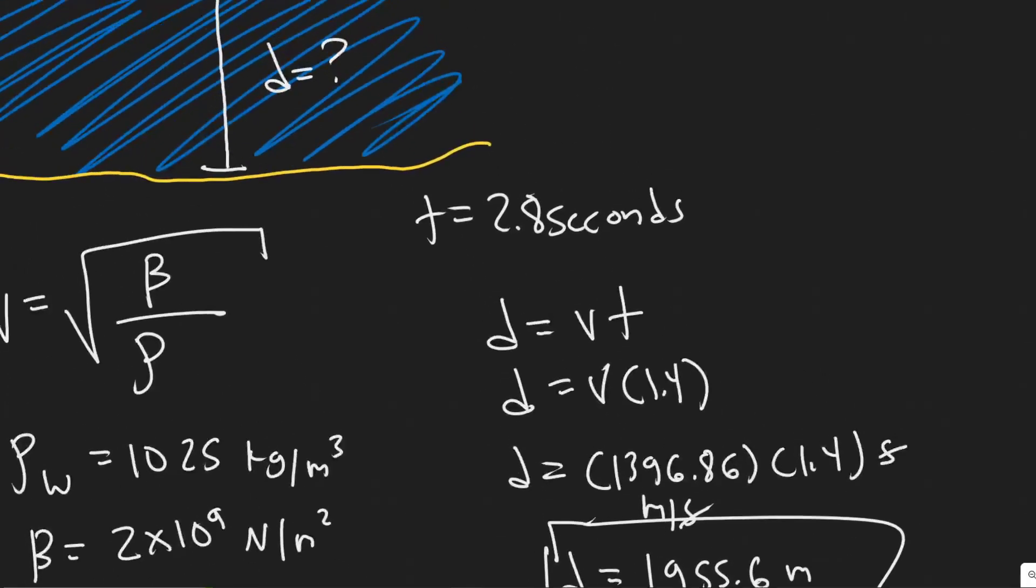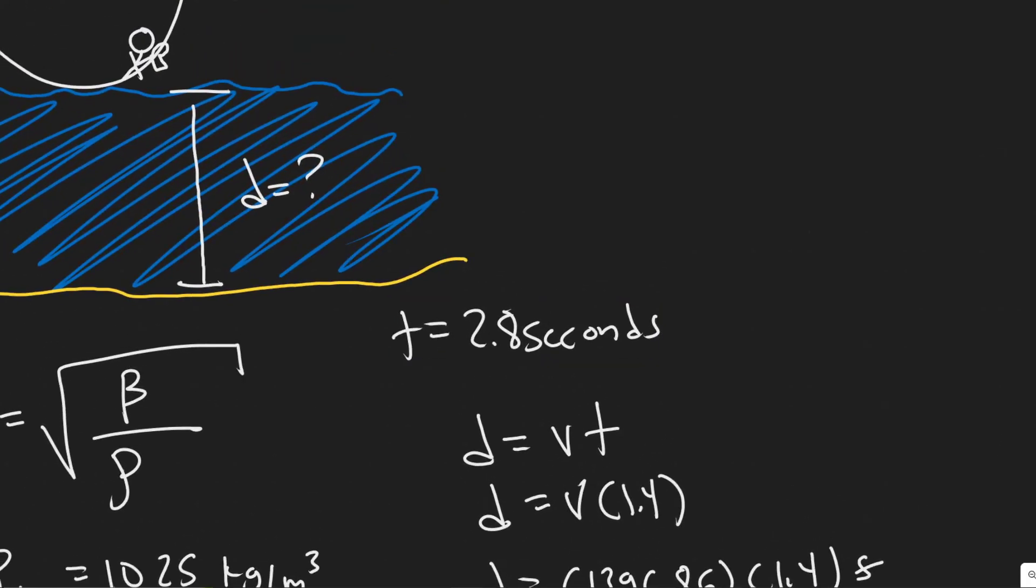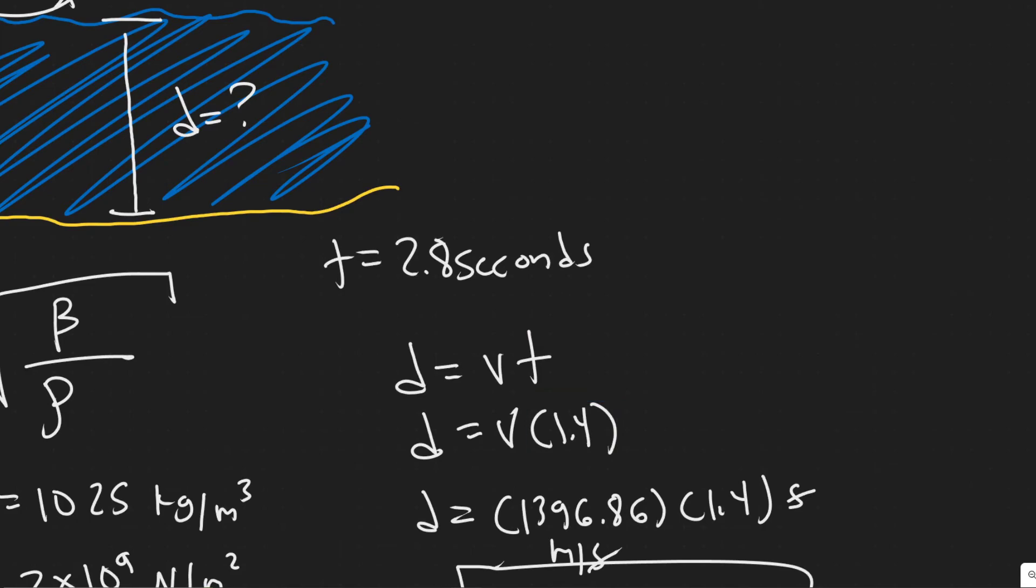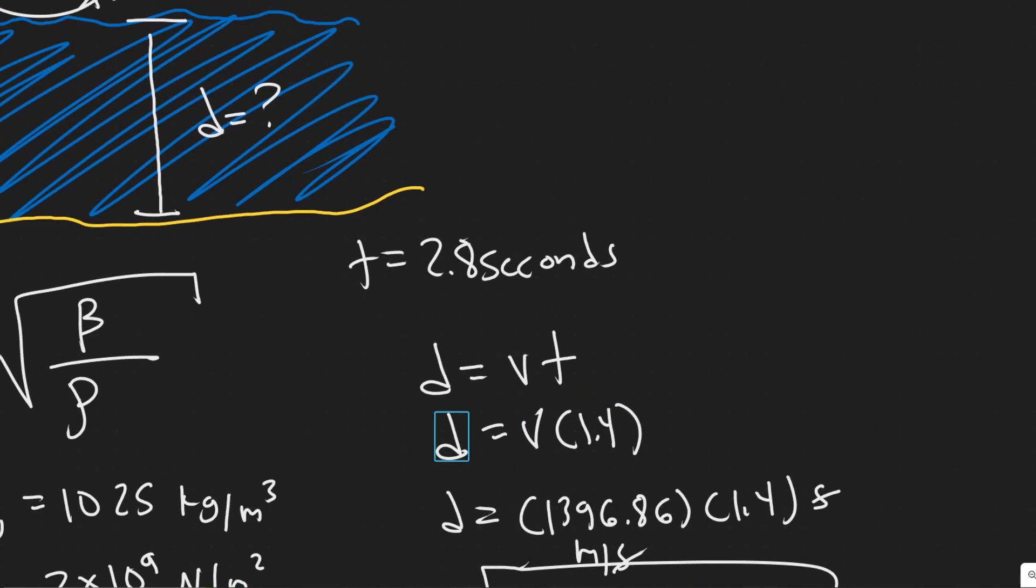Just a quick rundown of what we did. We knew the time is how long it takes to go top to bottom. So I knew the time just going down would be 1.4. I know distance equals velocity times time. So I can figure out the velocity, I can figure out the distance or how deep it is.